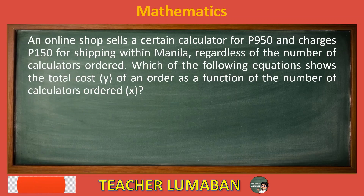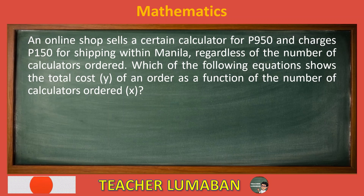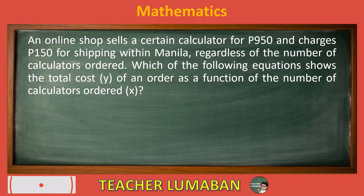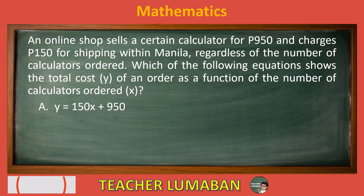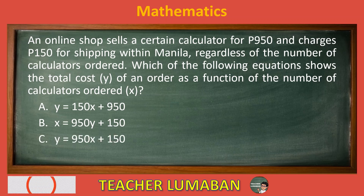An online shop sells a certain calculator for 950 pesos and charges 150 pesos for shipping within Manila, regardless of the number of calculators ordered. Which of the following equations shows the total cost Y of an order as a function of the number of calculators ordered X? Letter A: Y equals 150X plus 950. Letter B: X equals 950Y plus 150. Letter C: Y equals 950X plus 150.